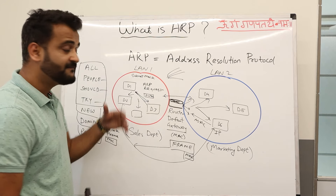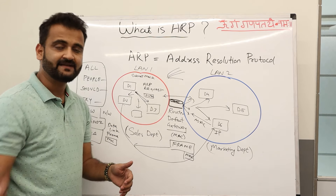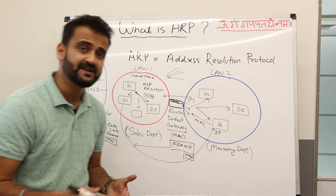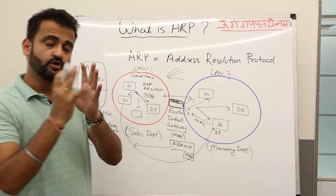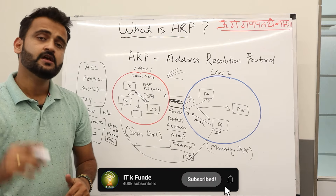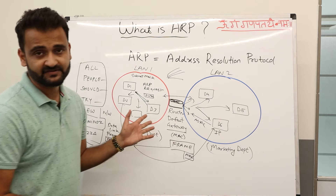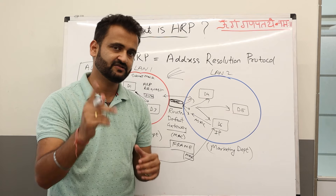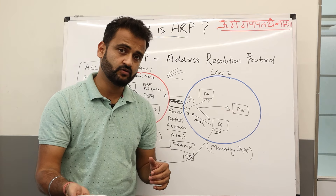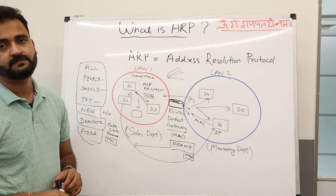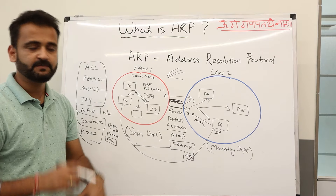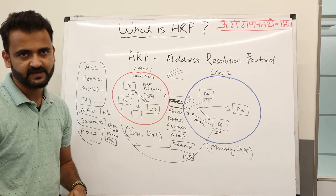Once ARP request and response is completed, there is something called the ARP cache. Every device maintains its own table mapping IP addresses to MAC addresses, so that next time we are not wasting time repeating this process. We go directly to the device, because it is only the first time we need to discover the MAC address — for all subsequent communication we already have the ARP table.